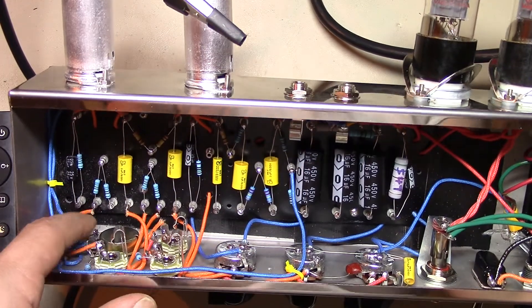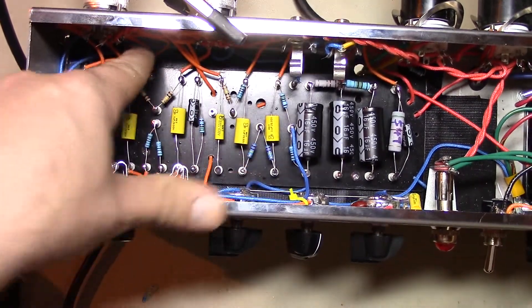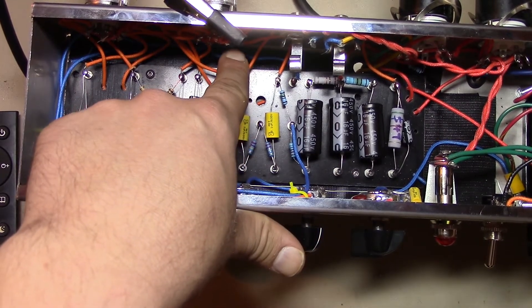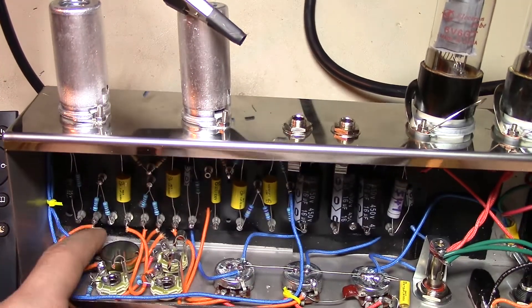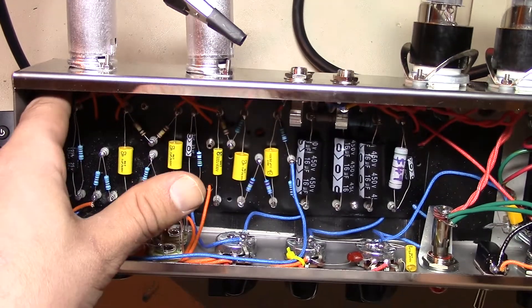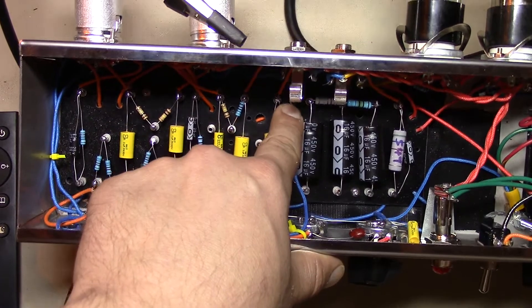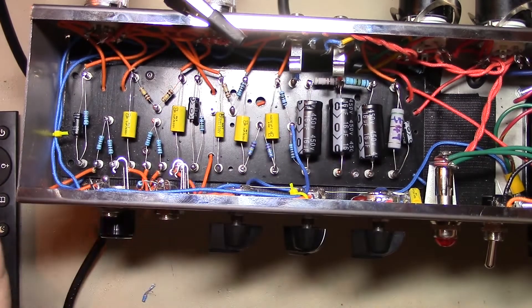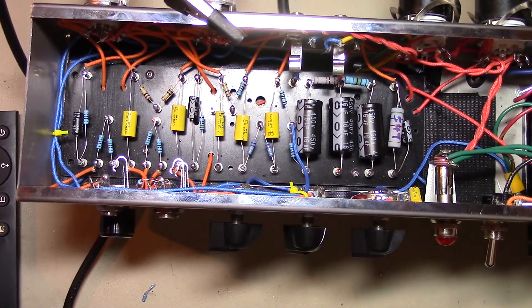All right, we've taken our first leftmost terminal here on the pot and we've driven it to a ground point right here, all right, where the grid leak resistor used to be. Now we've taken the second terminal, we've wrapped it around, we've snaked it underneath, and it is going to pin 7 here. Very important. Now last but not least, this terminal here, we wrapped a wire all the way around, again snaked it under, and it came to this point here, right where the other end of the grid leak resistor used to be.